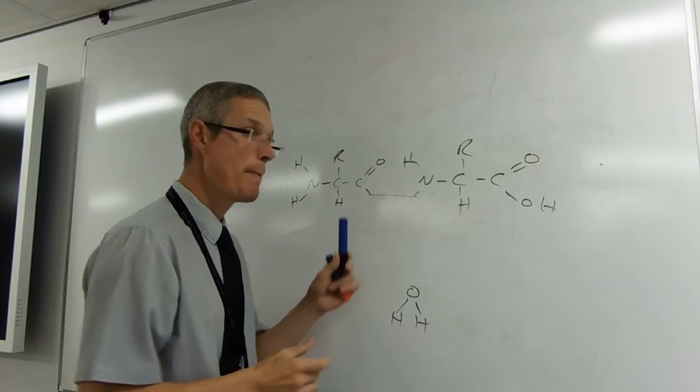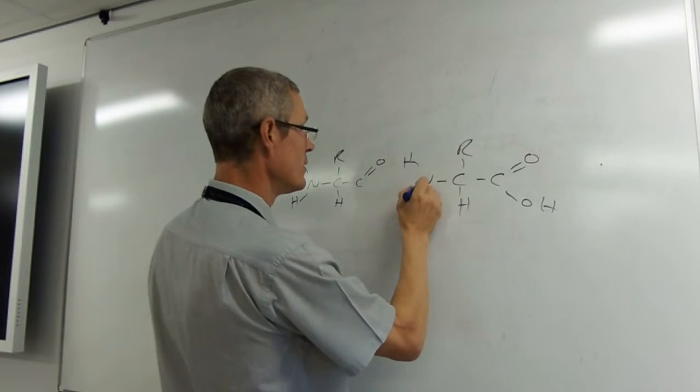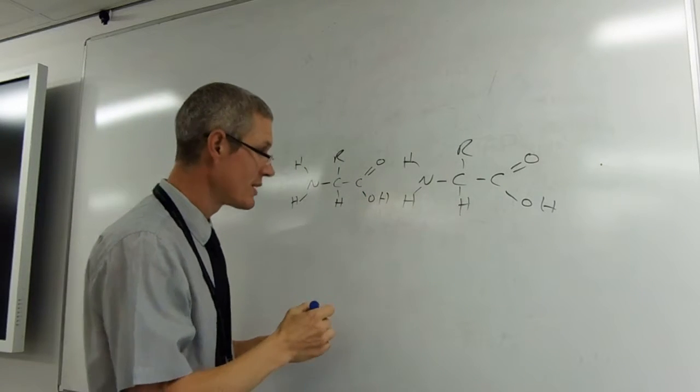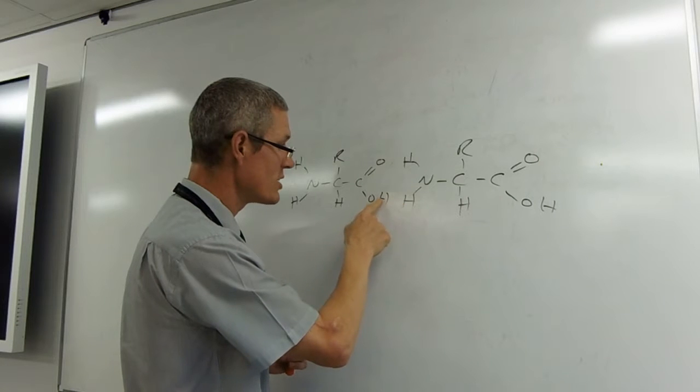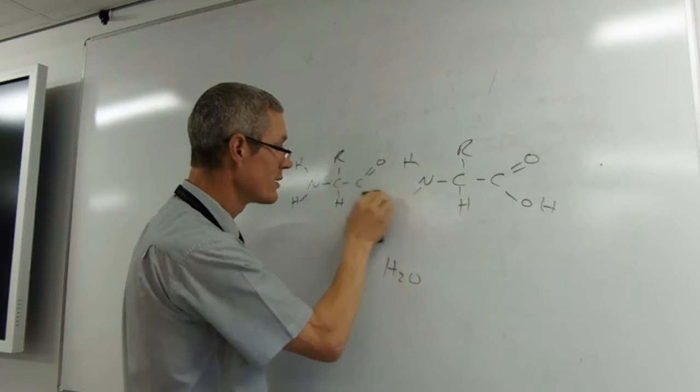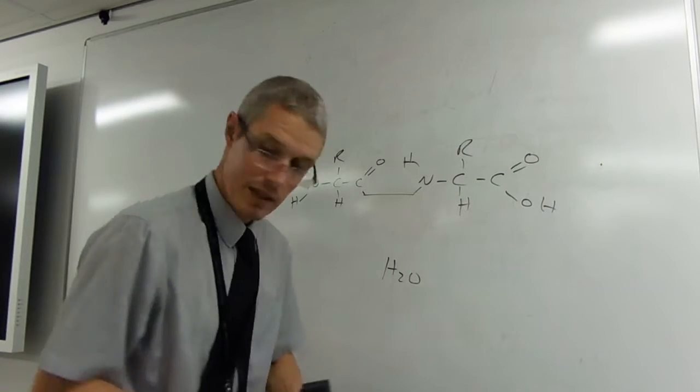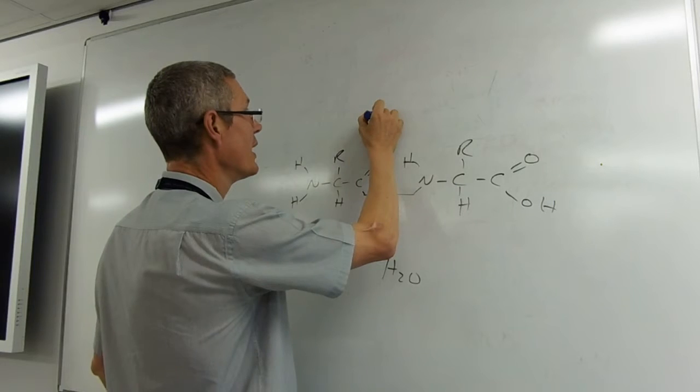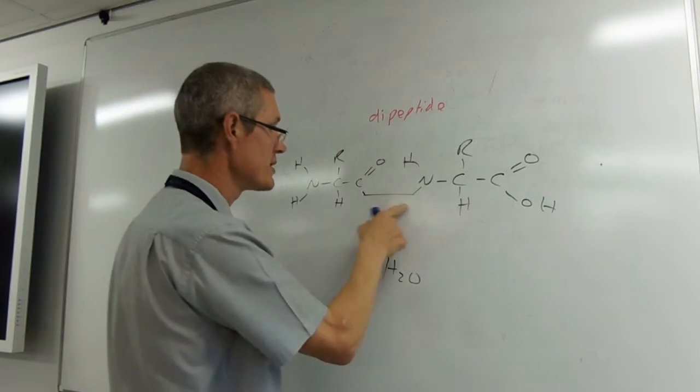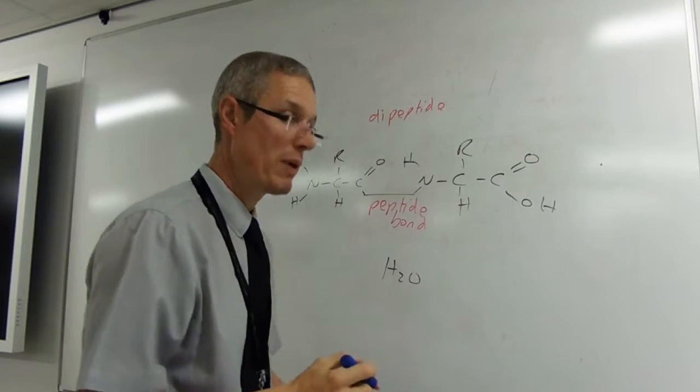And that is a peptide bond. I'm going to do that again. So there's my amino group. Here's my OH of the acid. I get rid of water. H2O. So I've paid for it there. And I've joined those two up. I've made a dipeptide. This bond here. Peptide bond or peptide linkage.